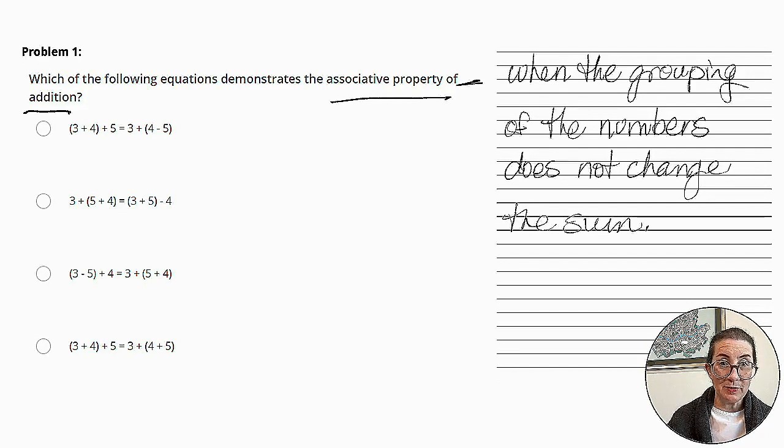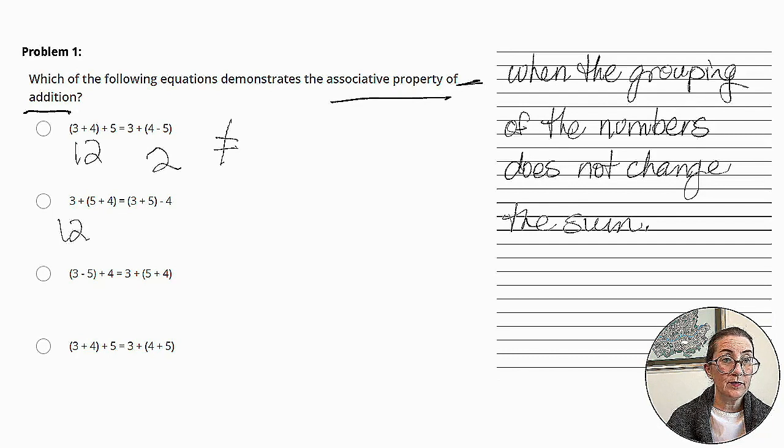So let's look at the possible answers. 3 plus 4, which is 7, plus 5 is 12. And 4 minus 5 is negative 1, 3 minus 1 is 2. These are not equal. Next one. 5 plus 4 equals 9, plus 3 is 12. 3 plus 5 is 8, minus 4 is 4. So these are not equal.